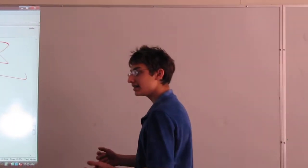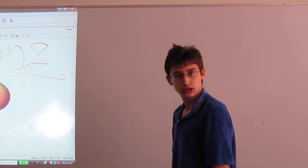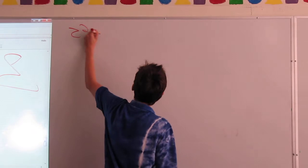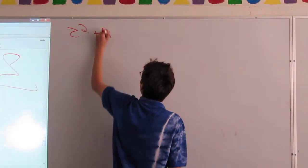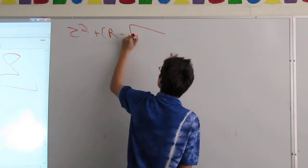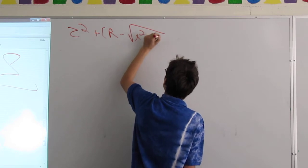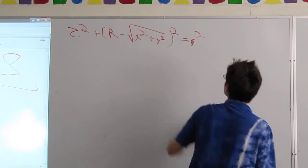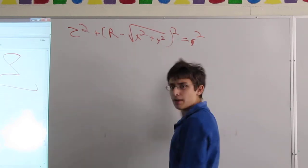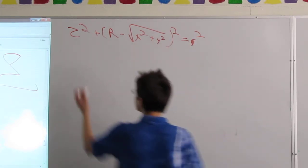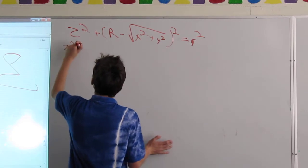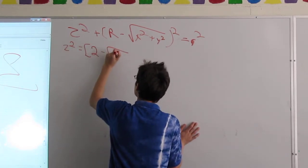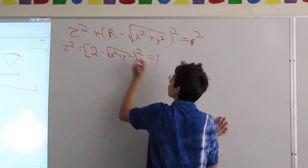Now, today we will be analyzing the partial derivatives of our Torus function, which looks like this. The general function is z squared plus R minus the square root of x squared plus y squared squared equals little r squared. Now, we will put in some nice numbers like R equals 2 and r equals 1. So, z squared plus 2 minus square root of x squared plus y squared squared equals 1.